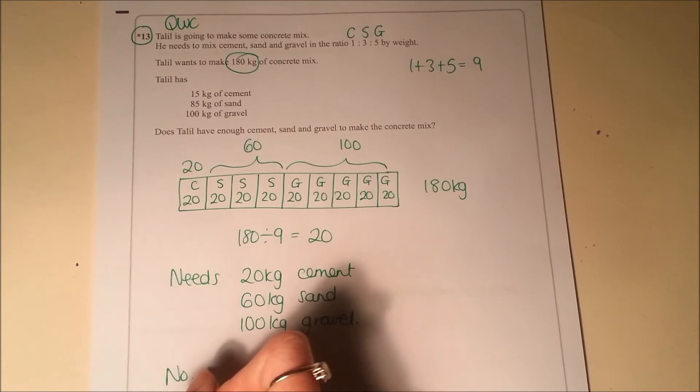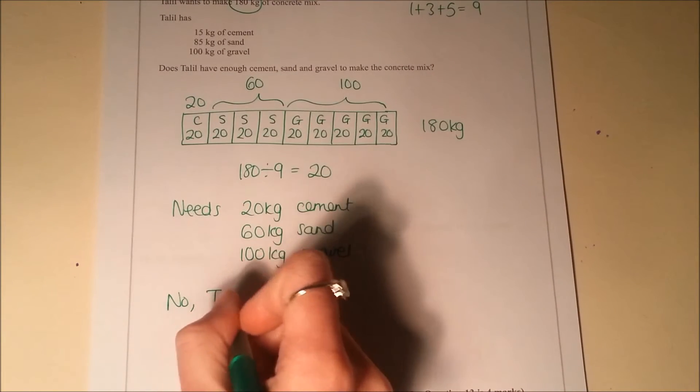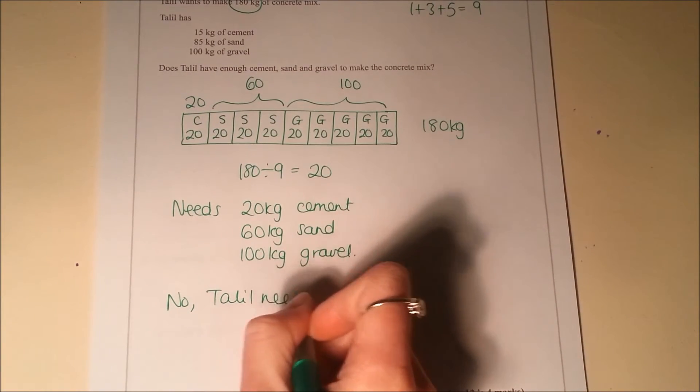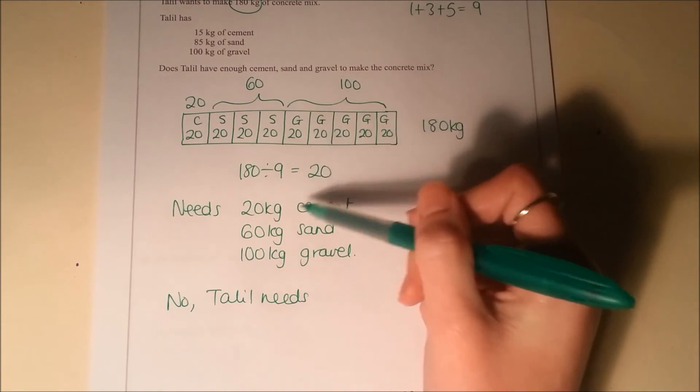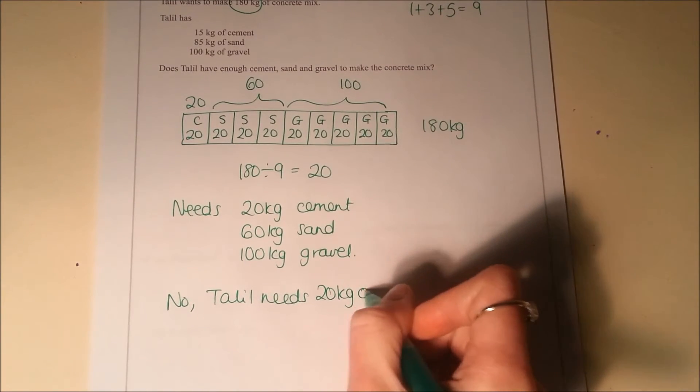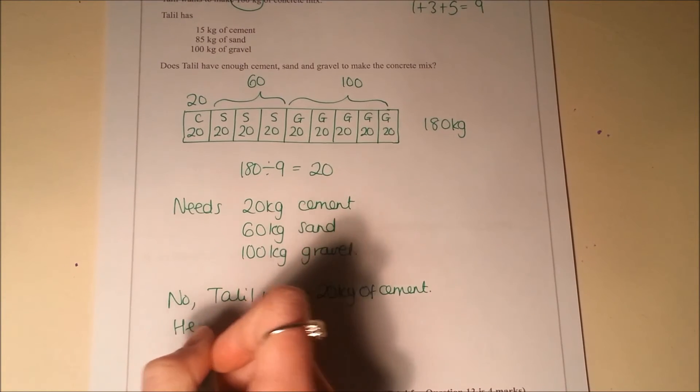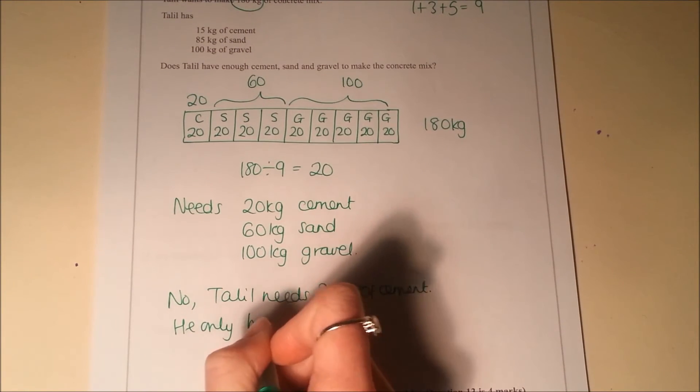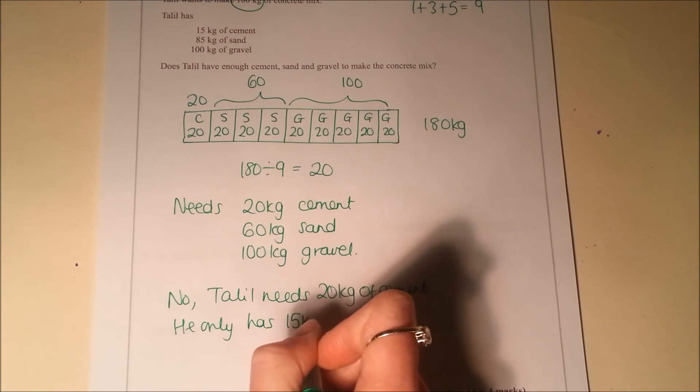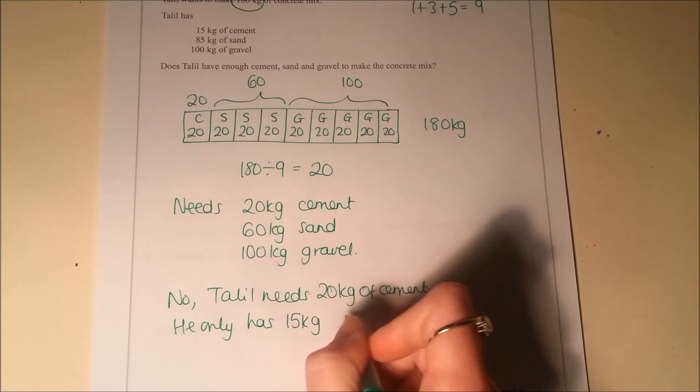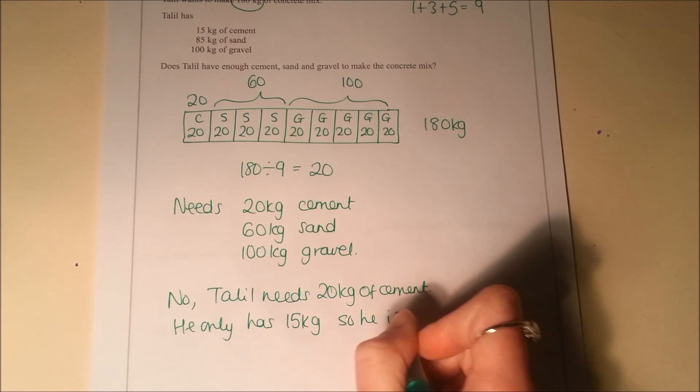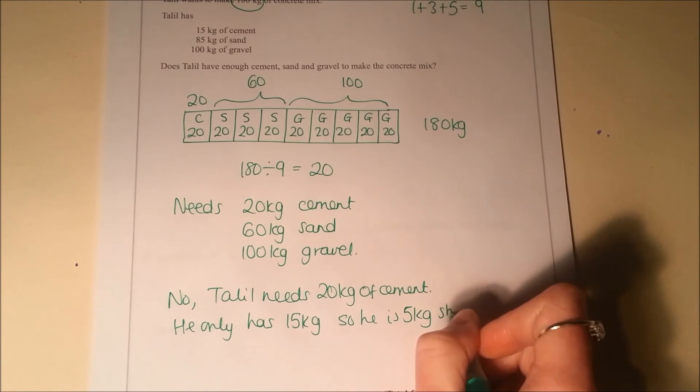Well, no. So Talil needs 20 kilograms of cement, he only has 15 kilograms. And you could even say, so he is 5 kilograms short. So he's going to need 20 kilograms of cement.